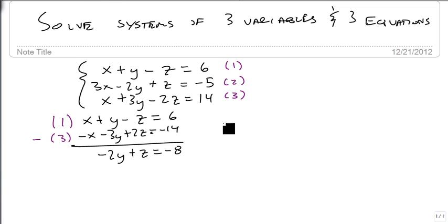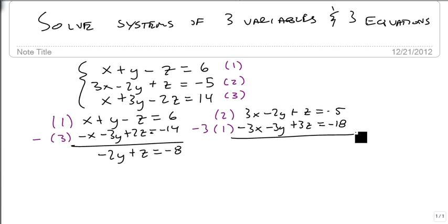Now, we still need to get rid of the x from equation two. And I'm going to subtract three times equation one to do that. So equation two, we copy exactly: minus 3x plus 2y plus z equals minus 5. And we're going to triple and change the sign of all the terms to get this. So when we add these together, we get minus 5y plus 4z equals minus 23.